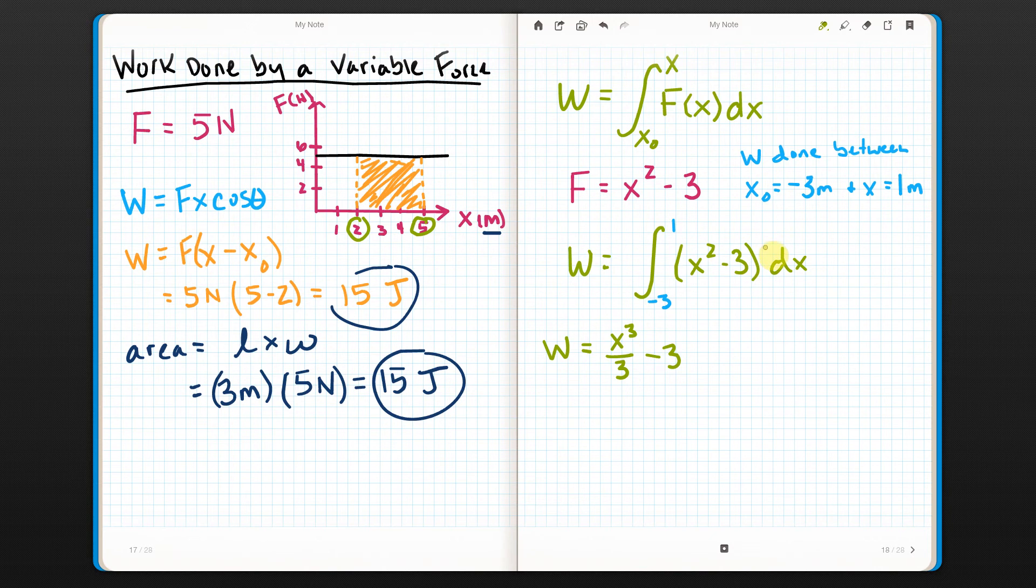Minus 3. Now, this used to be x to the 0th. So this becomes x to the 1st. And then divided by 1, it basically goes away. Now, since I have limits, I don't have to do that plus c thing. Instead, I do this funny vertical line. And I put the limits back on. And then to actually get a number out of this, I put the top number in.